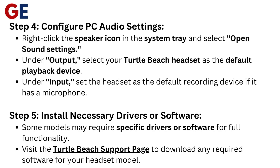Step 4: Configure PC audio settings. Right-click the speaker icon in the system tray and select Open Sound Settings. Under Output, select your Turtle Beach headset as the default playback device. Under Input, set the headset as the default recording device if it has a microphone.